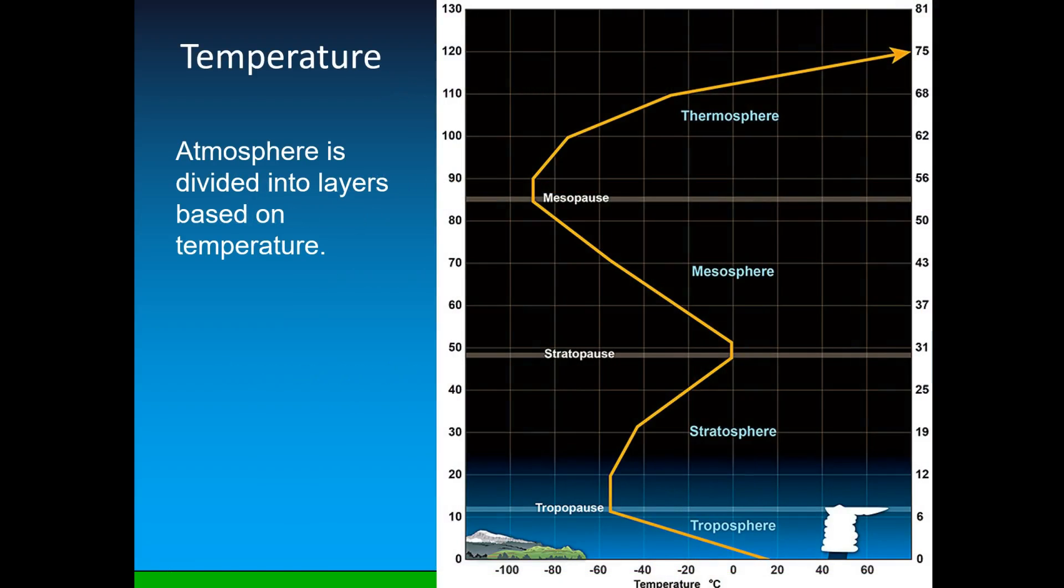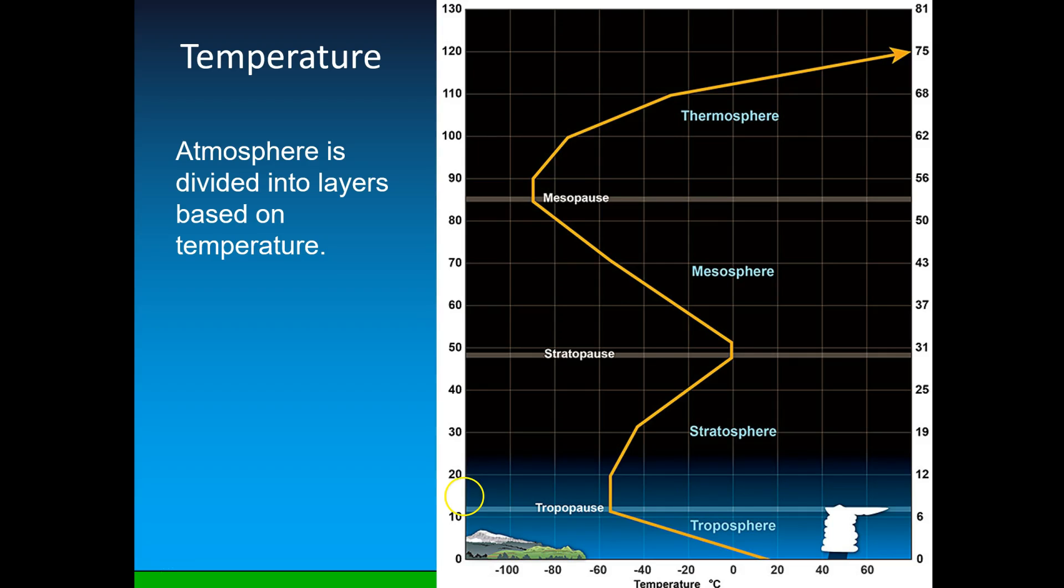As we start up from our current position, the temperature goes down, but it changes direction and starts increasing later and then decreasing later and increasing again. We actually have defined these changes in the temperature profile as layers of the atmosphere. So whenever the atmosphere changes from getting hotter to getting colder or vice versa, that's a different layer of the atmosphere. There are four primary layers. The troposphere, the stratosphere, the mesosphere, and the thermosphere. We're going to learn more about these now.